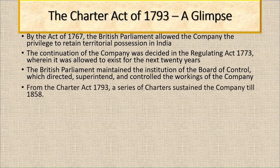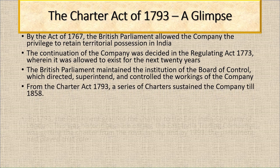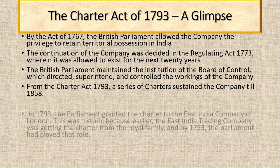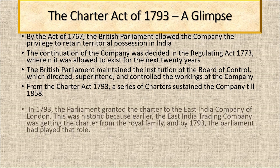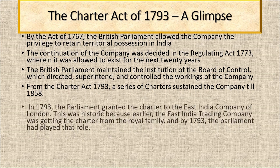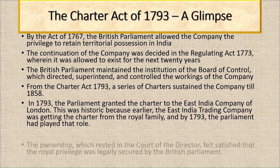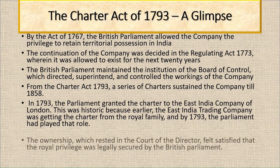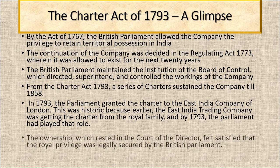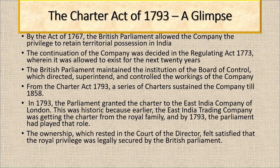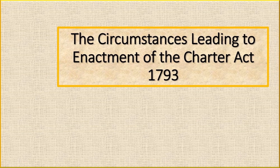The British Parliament maintained the institution of the Board of Control, which directed, superintended, and controlled the workings of the company. In 1793, the Parliament granted the charter to the East India Company of London. This was historic because earlier the East India Trading Company received the charter from the royal family, but by 1793, Parliament had taken on that role. The Court of Directors felt satisfied that the royal privilege was legally secured by the British Parliament.